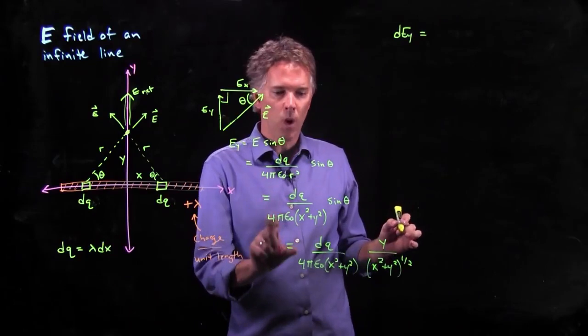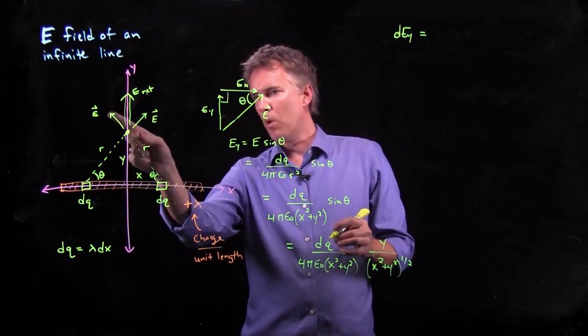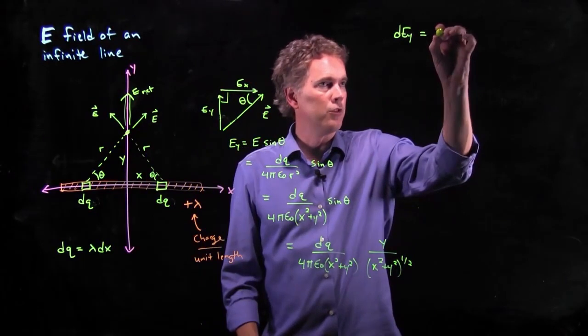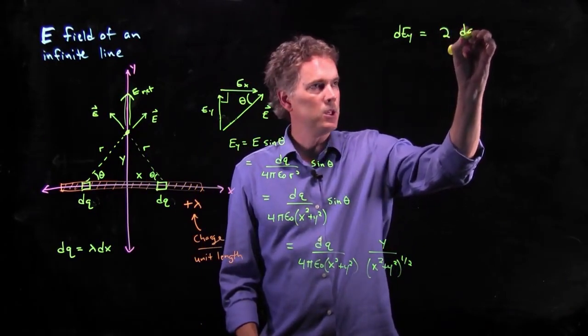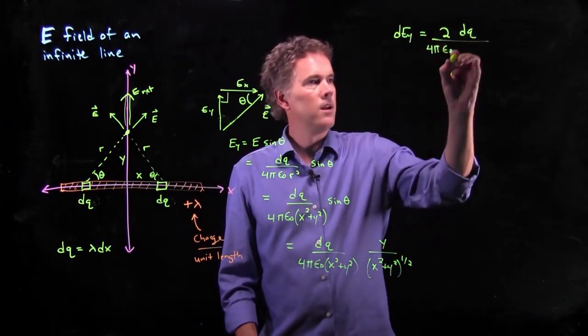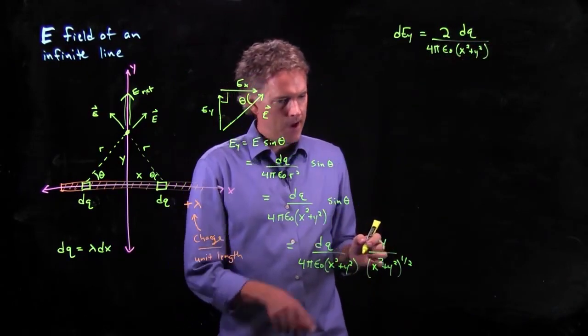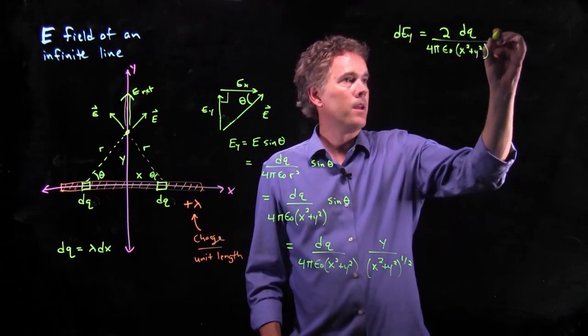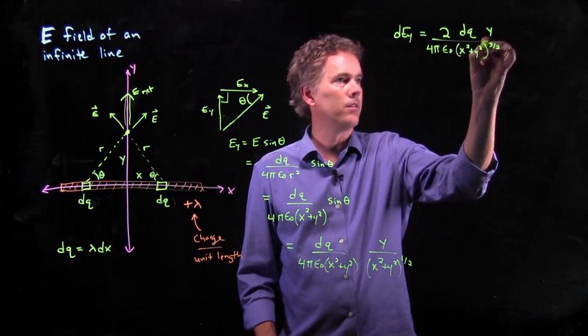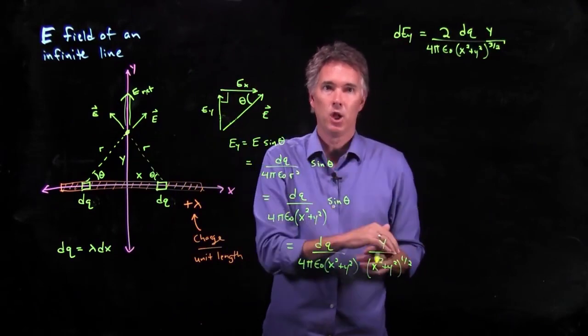And it's going to be twice this value. Why? Because we have 1 from this pointing to the right, we have 1 from this pointing to the left. They both add up vertically. And so this becomes 2 times dq divided by 4π epsilon not x squared plus y squared. And then we have a y, and this in the denominator became to the 3 halves. That's what our d e y looks like.